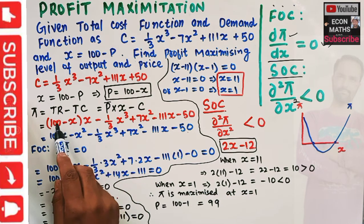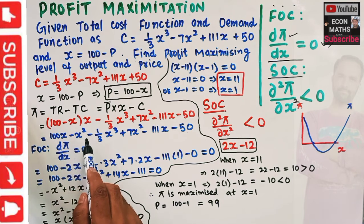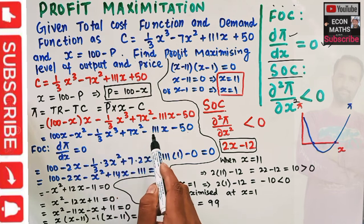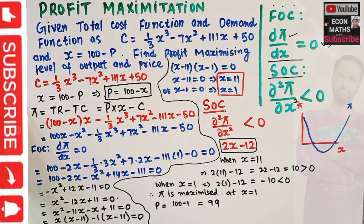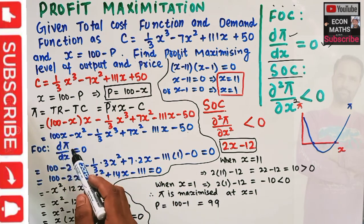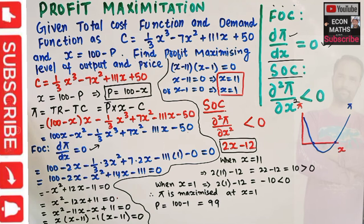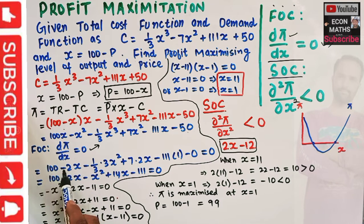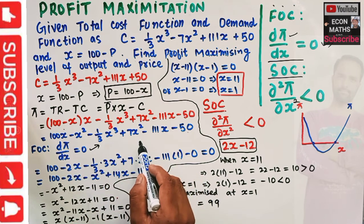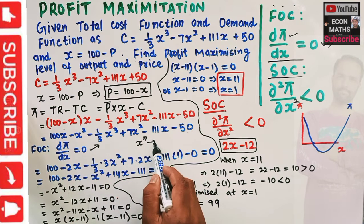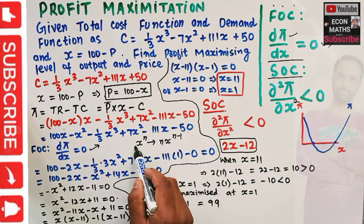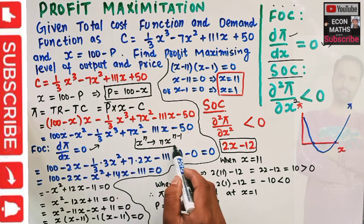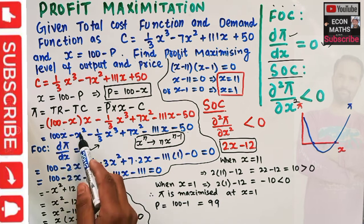Expanding, the profit function becomes: π = 100X - X² - (1/3)X³ + 7X² - 111X - 50. The first order condition requires the derivative of the profit function with respect to X equals zero. Taking the derivative: derivative of 100X is 100, derivative of X² gives 2X by the power rule — where the rule states that if we have Xⁿ, its derivative is nX^(n-1).